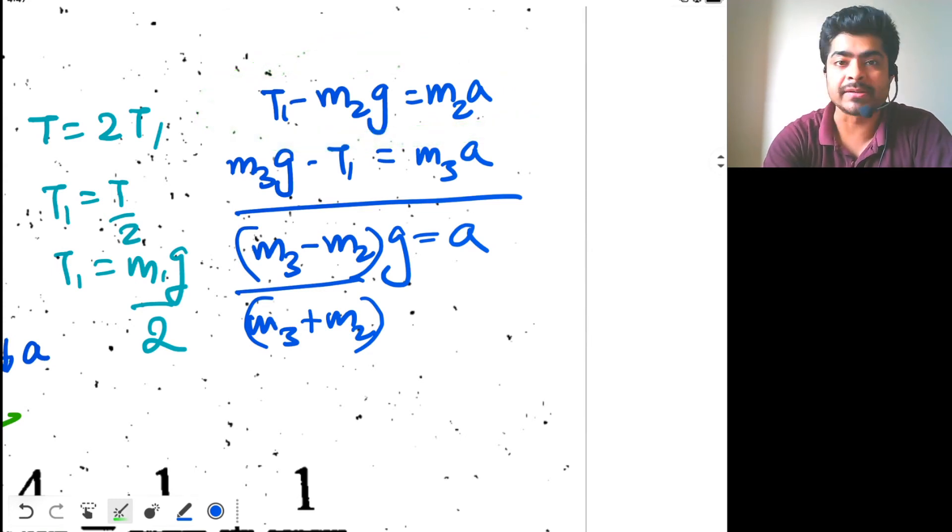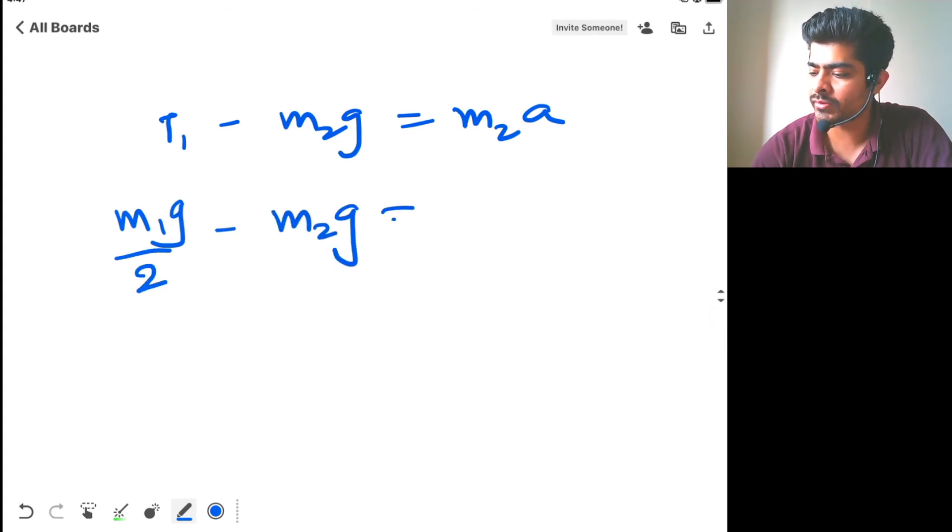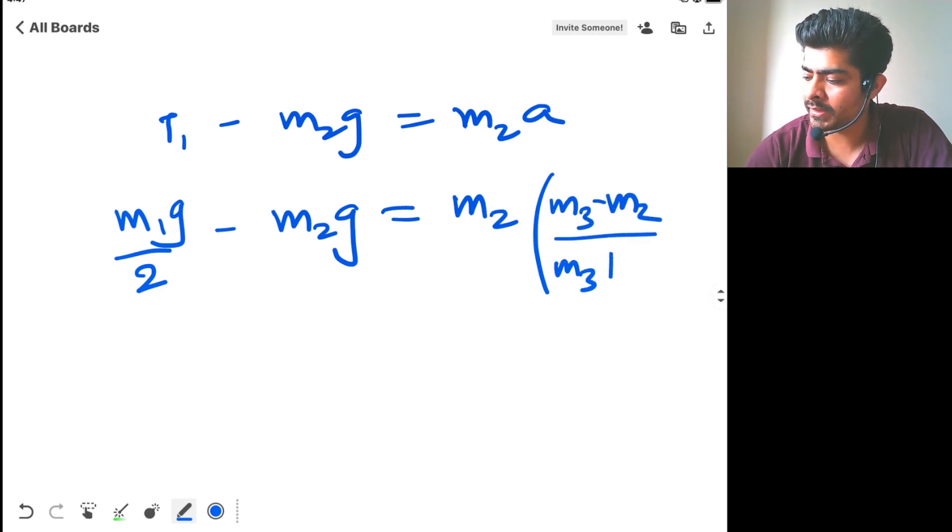For example, I have put in this equation T1 minus m2g equal to m2a, and T1 is m1g by 2. So m1g by 2 minus m2g equal to m2 times a, which is m2 times (m3 minus m2) upon (m3 plus m2) multiplied by g. So g will cancel out from the equation.